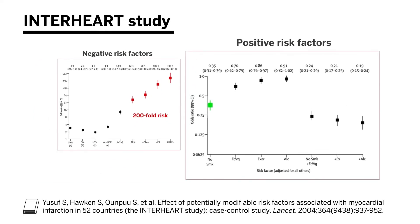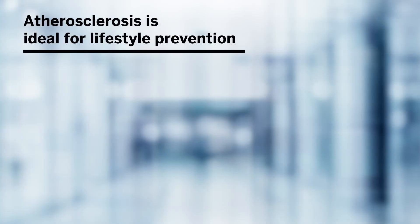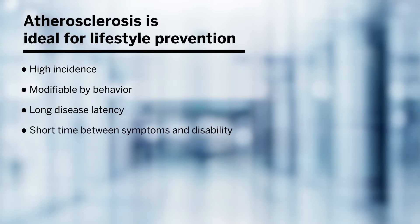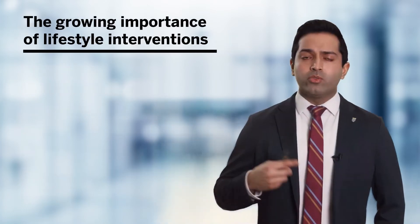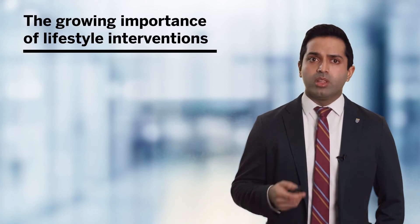Similarly, when you have one or two positive risk factors — those associated with a lower risk of cardiovascular disease — your risk may be mitigated somewhat. But as you add multiple positive risk factors, your risk is significantly mitigated. Atherosclerosis is a perfect candidate for lifestyle prevention: it is a high-incidence disease that is modifiable by behavior, with a long disease latency but a short time between symptoms and disability. Sudden cardiac death is a common manifestation, available treatments are unable to cure the underlying disease, and treatment of acute disease is associated with huge financial and societal cost.